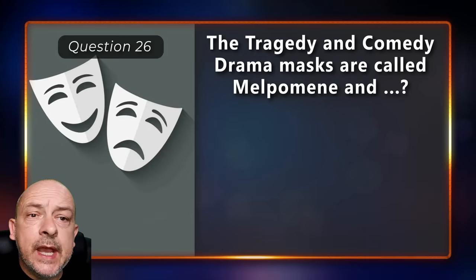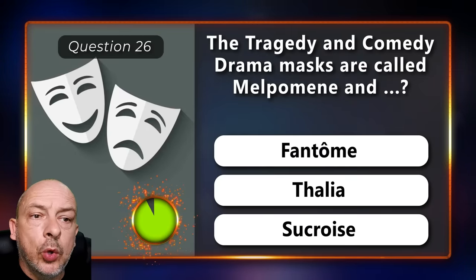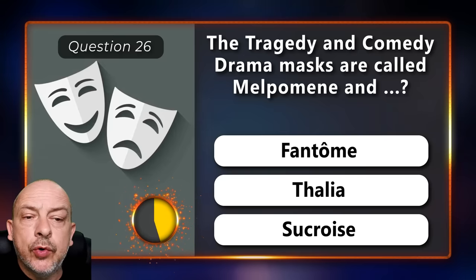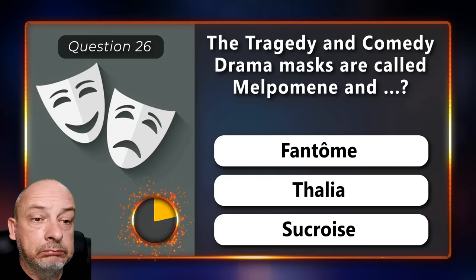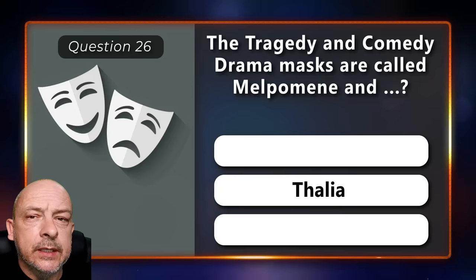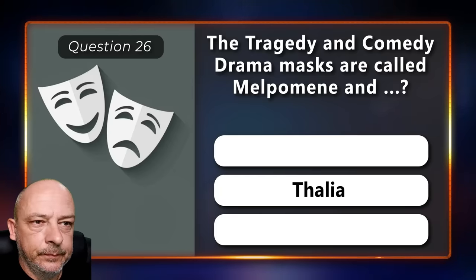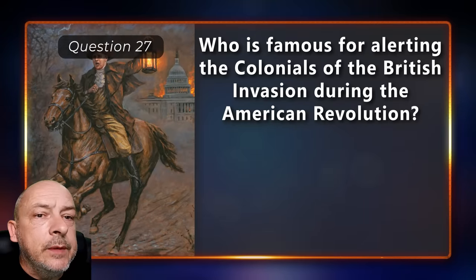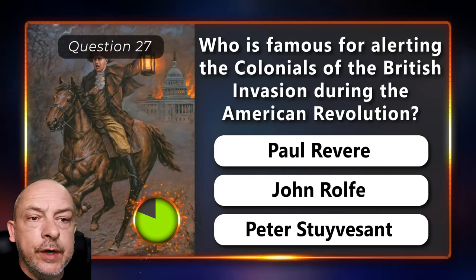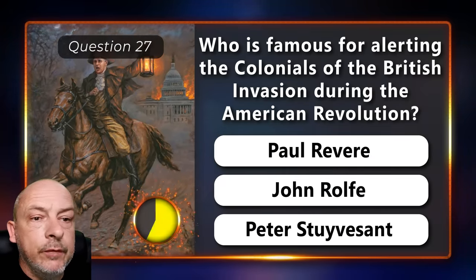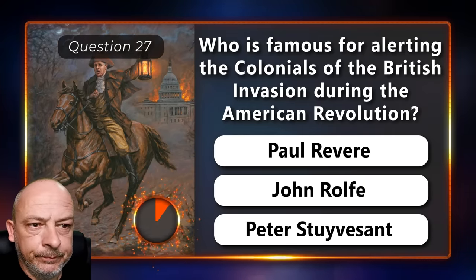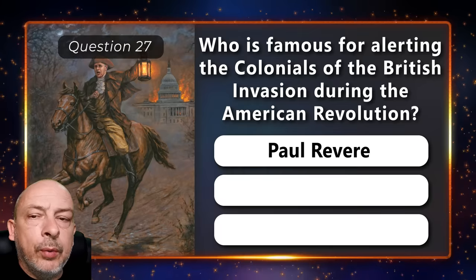The tragedy and comedy drama masks are called Melpomene and Thalia — or are those names Phantom and Sucrose? The answer is Thalia. Who is famous for alerting the colonists of the British invasion during the American Revolution — Paul Revere, John Rolfe, or Peter Stuyvesant? Paul Revere.